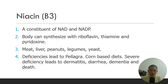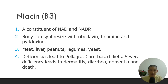Niacin, vitamin B3, is a constituent of NAD and NADP, which are coenzymes for the production of energy, and for metabolizing fat, protein, carbohydrates, and glucose. The body can synthesize niacin but requires other vitamins to do so. Deficiency can lead to pellagra — those who eat corn-based diets and don't eat flour or rice are at risk. Severe deficiency leads to the four Ds: dermatitis, diarrhea, dementia, and death.